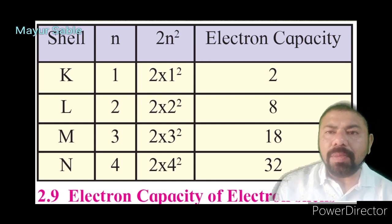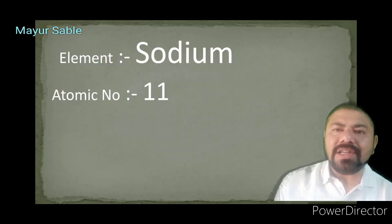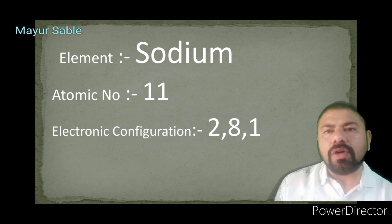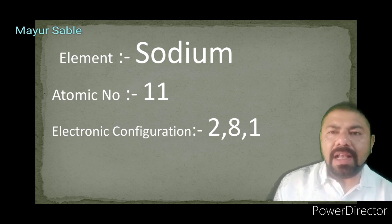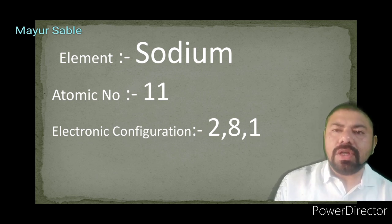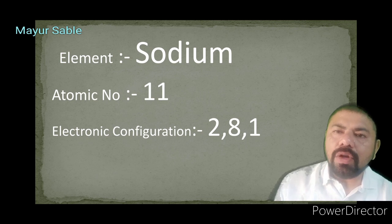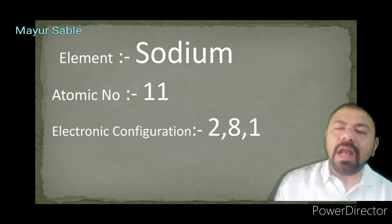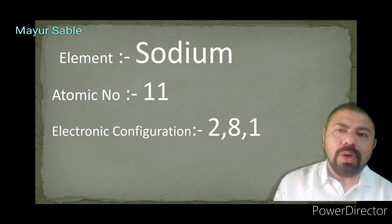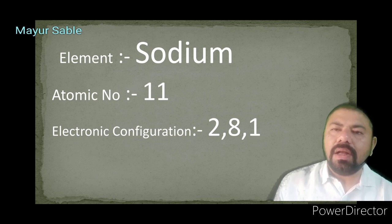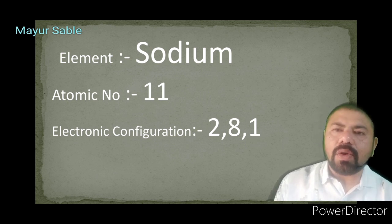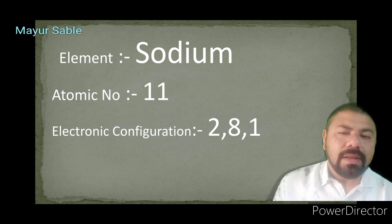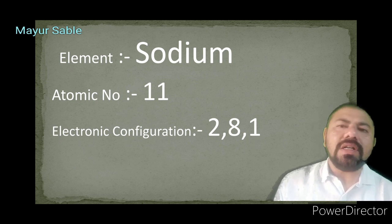For sodium, atomic number 11: the K shell acquires 2 electrons, leaving 9. The L shell accommodates 8 electrons, leaving 1. That 1 electron goes into the outermost M shell. Therefore, the electronic configuration of sodium is 2, 8, 1 — two electrons in K shell, eight in L shell, and one in M shell.